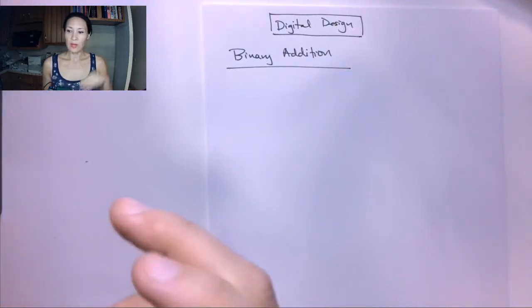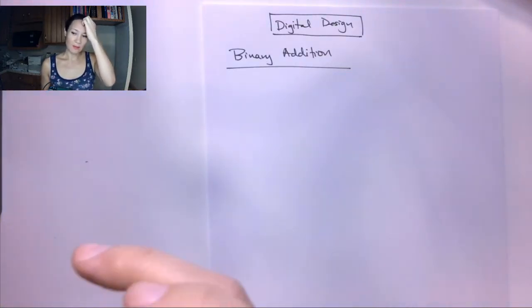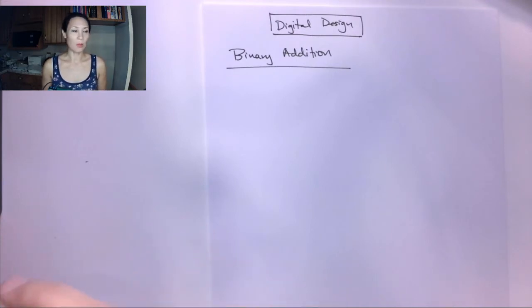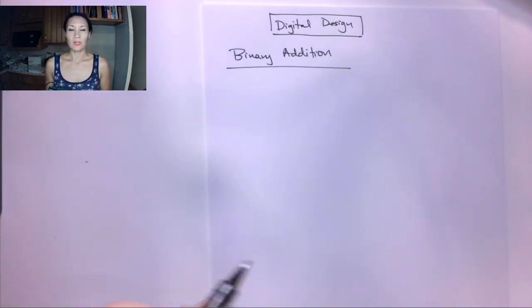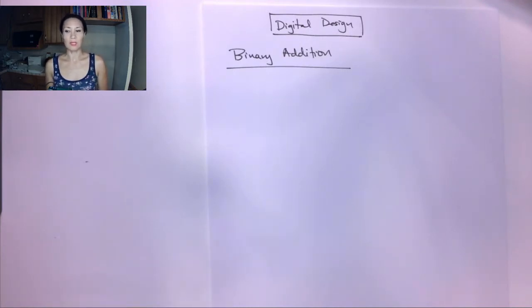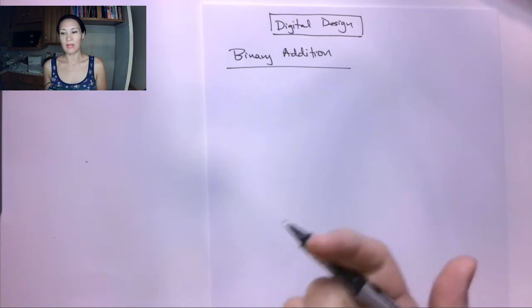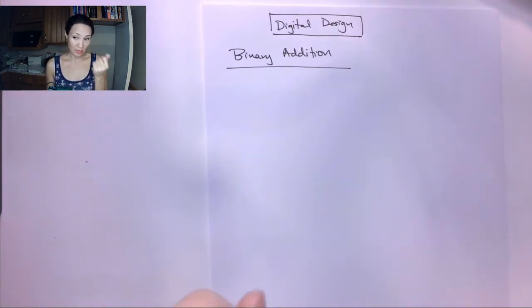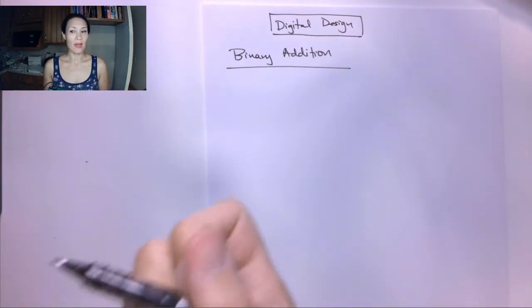We can now express any positive integer, fraction, or mixed number in binary. We'll start our discussion on negative binary numbers soon, but most methods for turning positive binary numbers into negative binary numbers rely on binary addition. So let's do that first.